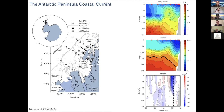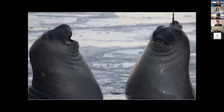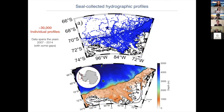What happens when you get close to the coast is there's a second circulation feature, shown in yellow, which is a southward-flowing coastal current. Notice that it can be tracked all the way south along the peninsula, and when it reaches the Bellinghausen Sea, its fate is a little bit unclear in this schematic. A lot of this comes from work that Carlos led on the West Antarctic Peninsula.